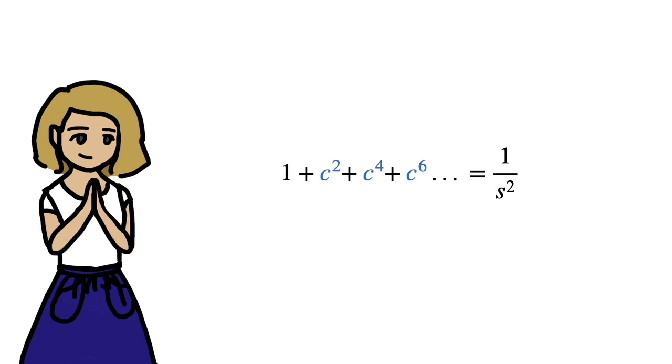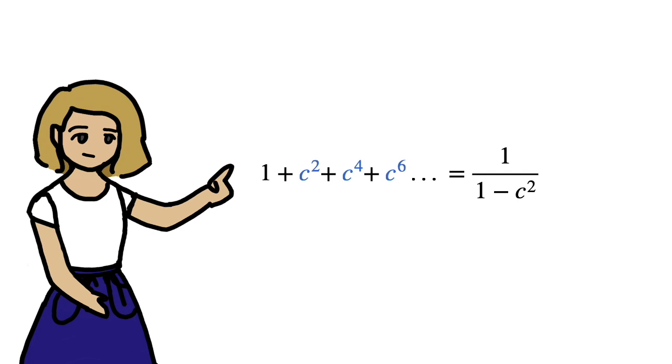Now dividing through by s squared, we get this identity. And now, remembering that s is sine theta and c is cos theta, we can use the Pythagorean identity to get this equation.